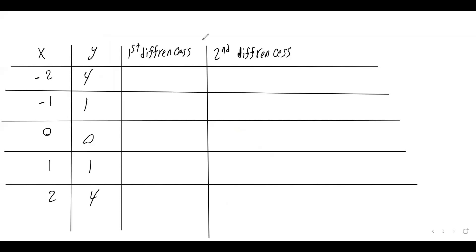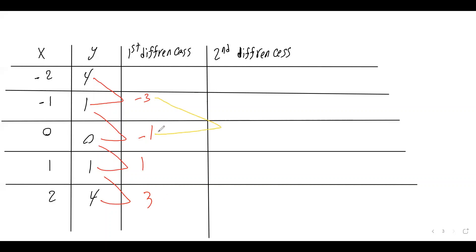The first differences are: 1 minus 4 equals negative 3; 0 minus 1 equals negative 1; 1 minus 0 equals 1; 4 minus 1 equals 3. The second differences are: negative 1 minus negative 3 equals 2; 1 minus negative 1 equals 2; 3 minus 1 equals 2. The second differences are all 2, which is a constant, confirming this is a quadratic relation.